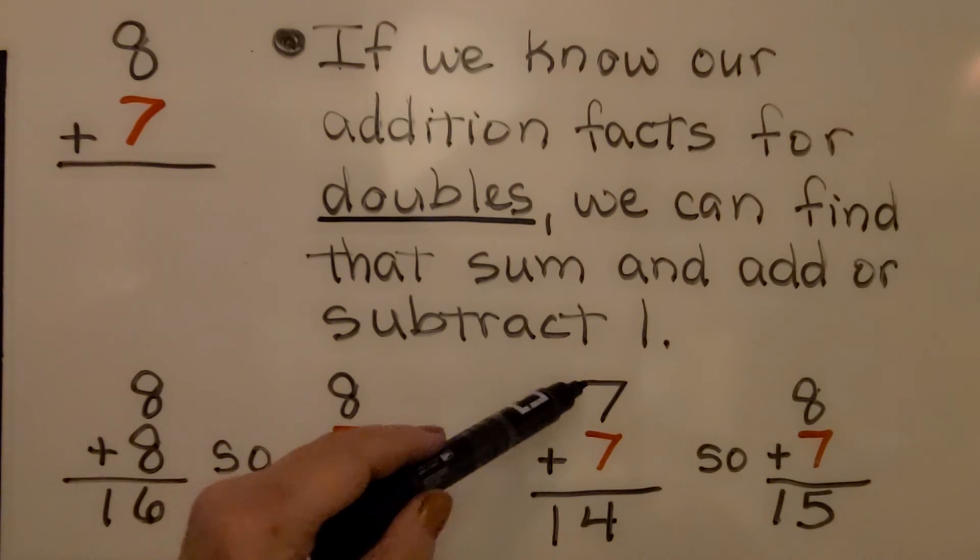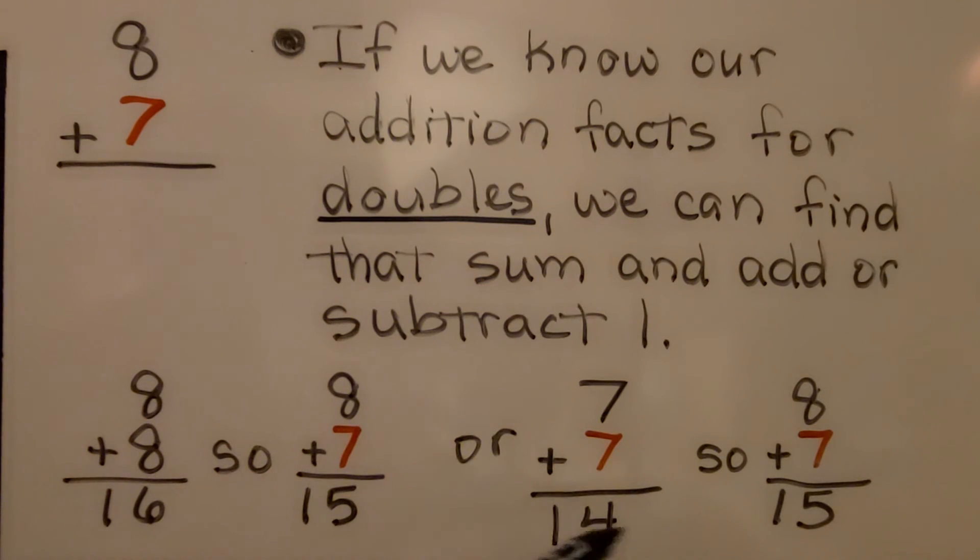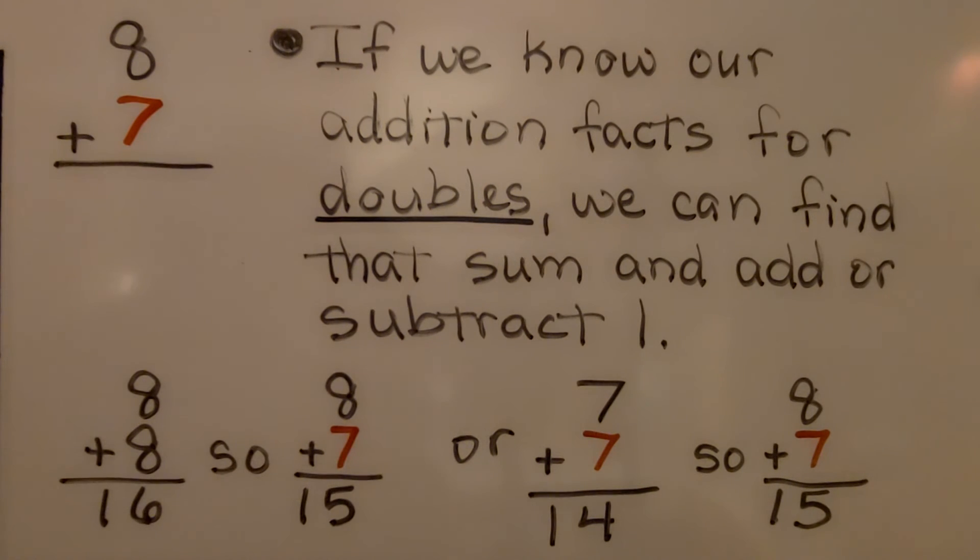Or, if we know that 7 plus 7 is 14, then 8 plus 7 must be 15. We can find doubles and add 1 or subtract 1 to find the sum. I'm going to put a link in the description for a lesson if you want to know more about adding doubles plus 1 or doubles minus 1 to add quickly.